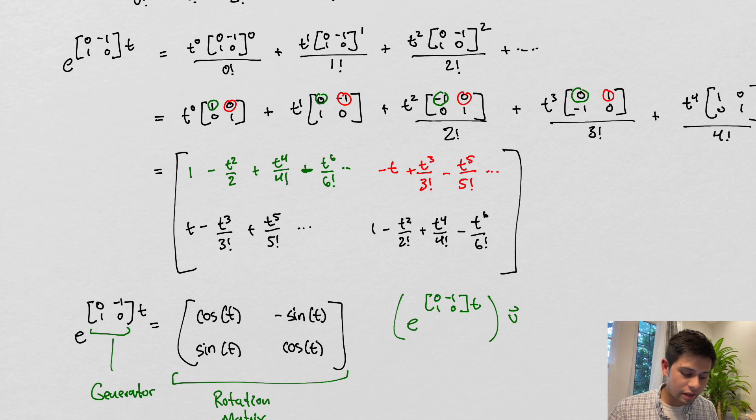We can do the same thing for the red, those color-coded, we can do the same thing for the bottom right and left entries as well, where we get these. Okay, now what do these look like?